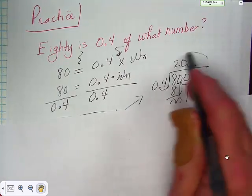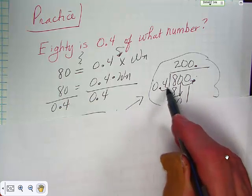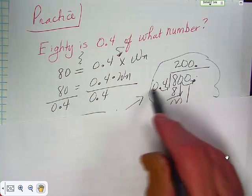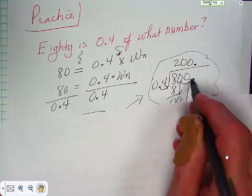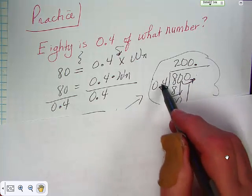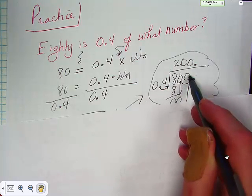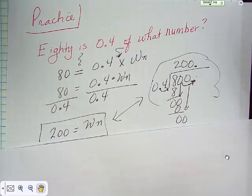800 divided by, excuse me, it's 80 divided by 0.4, but then you have to move the decimal over and move the decimal over because we can't divide by a decimal. So then you end up with 4 into 800, which is pretty easy to figure out, but it ends up to be 200. So, 200 is your what number. So, 80 is 0.4 of 200.